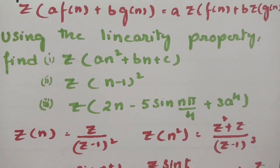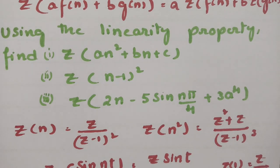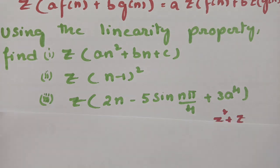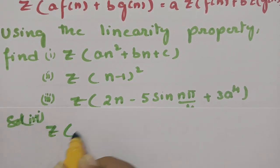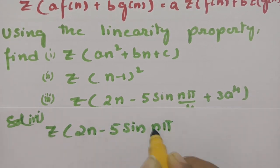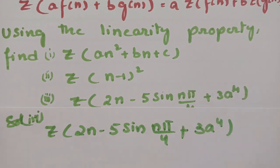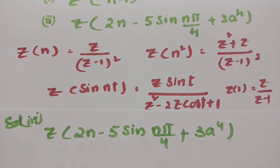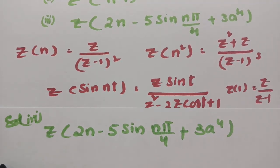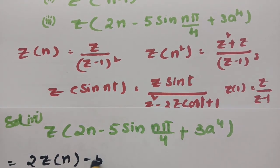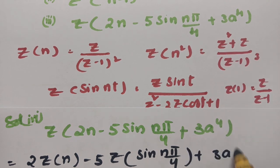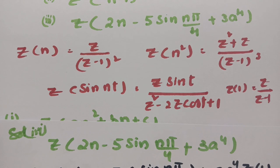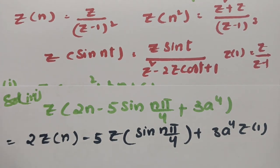The third question is the Z transform of 2n − 5·sin(nπ/4) + 3a⁴. Applying the linearity property, we take the constants outside: 2·Z{n} − 5·Z{sin(nπ/4)} + 3a⁴·Z{1}. The formula for Z{sin(nT)} = Z·sin(T) / (Z² − 2Z·cos(T) + 1), where T = π/4.